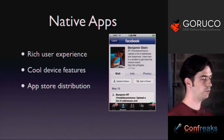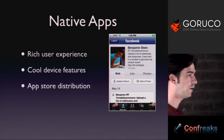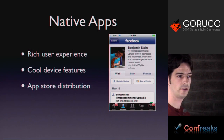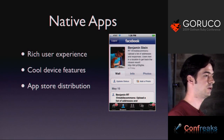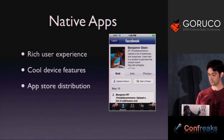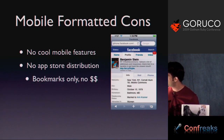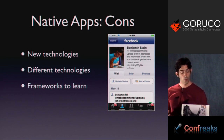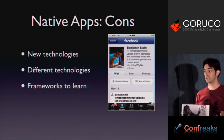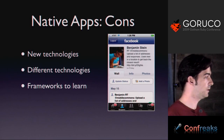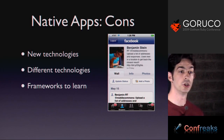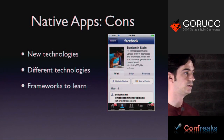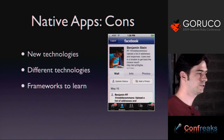Let's talk about native apps. Why are they good? It's a rich user experience — you get access to all the cool device features, fantastic graphics, good processors. There are really nice advantages to building a native app, and you have App Store distribution. The big cons are that there are new and different technologies — every platform has its own programming language and frameworks to learn on top. To actually become an expert in Objective-C and Java and their frameworks, all while developing Ruby and Rails code, is really just too much.